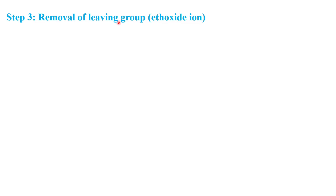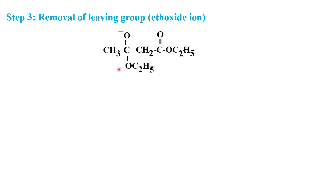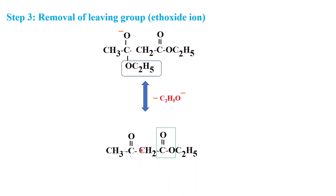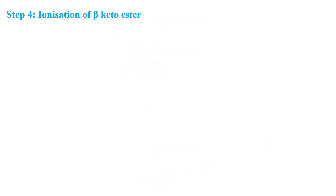Step 3 is the removal of the leaving group. From the alkoxide ion, the ethoxide ion is removed as the leaving group. Due to this removal, the negative charge becomes a bond and we get the beta-ketoester product — but only in a very small amount. Therefore, we proceed to step 4.